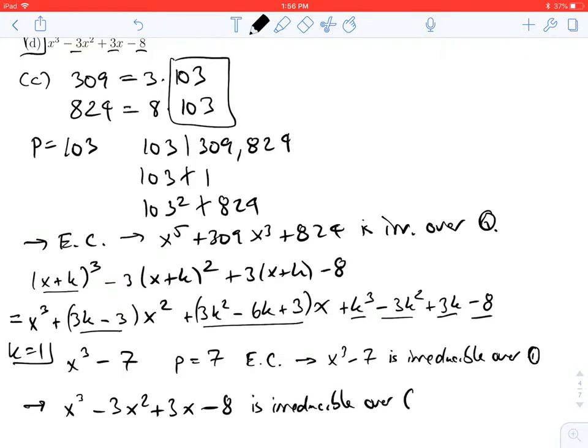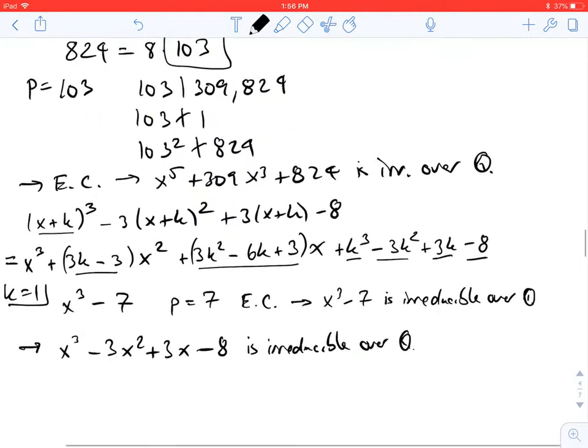In terms of function notation, if f(x) = x^3 - 3x^2 + 3x - 8, then x^3 - 7 was a shift by +1, so this would be f(x+1).